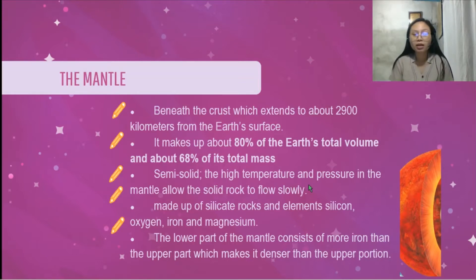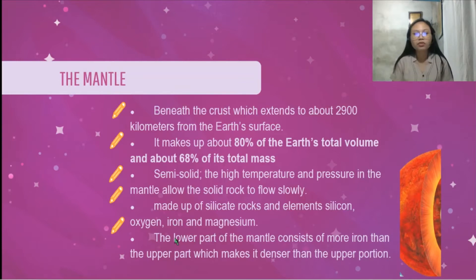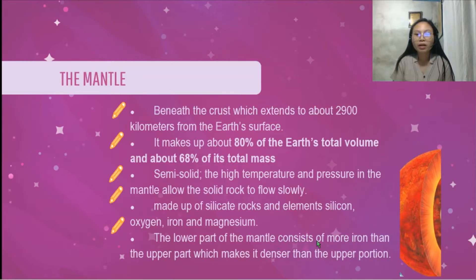We will examine that in the picture. The mantle is made up of silicate rocks and elements silicon, oxygen, iron, and magnesium. The lower part of the mantle consists of more iron than the upper part, which makes it denser than the upper portion. So density depends on the composition — the part of the mantle with more iron has higher density compared to the part which contains fewer iron.